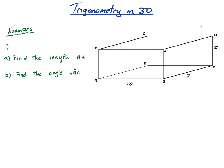The first example is a cuboid. Here's a cuboid with points labeled A, B, C, D, E, F, G, H. This is a cuboid in three dimensions. This length is 10, the depth is 7 and the height is 5 units. Find the length AH.